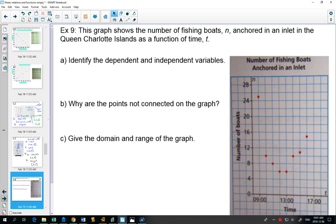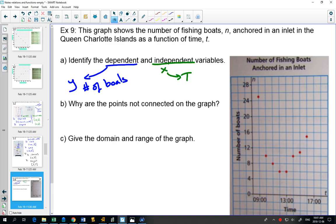So what is our dependent and independent? Well, dependent is always on your y-axis. And so dependent is number of boats. Your independent is always on your x-axis. That is time.